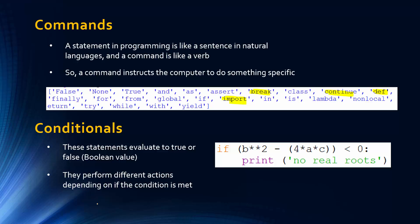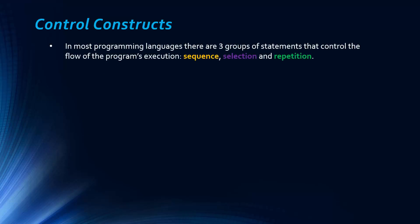And actually, conditionals form part of something we'll look at next, which is selection constructs. So in programming, there are three constructs, really fundamental constructs, that control the flow of a program's execution. I like to think of them as building blocks in your program. And so the flow of a program is the order in which the statements are executed. So the path of the flow can be changed depending on these constructs.